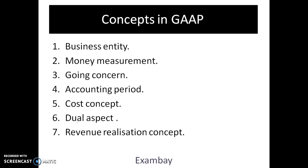The fourth one is the accounting period concept. It refers to the span of time after which financial statements of an enterprise would be prepared — normally annual. We have a financial year from April to March, and the final results of the company are prepared at the end of March, which is why we say March closing. You can also prepare statements semi-annually or quarterly, but preparing annually is the standard practice.